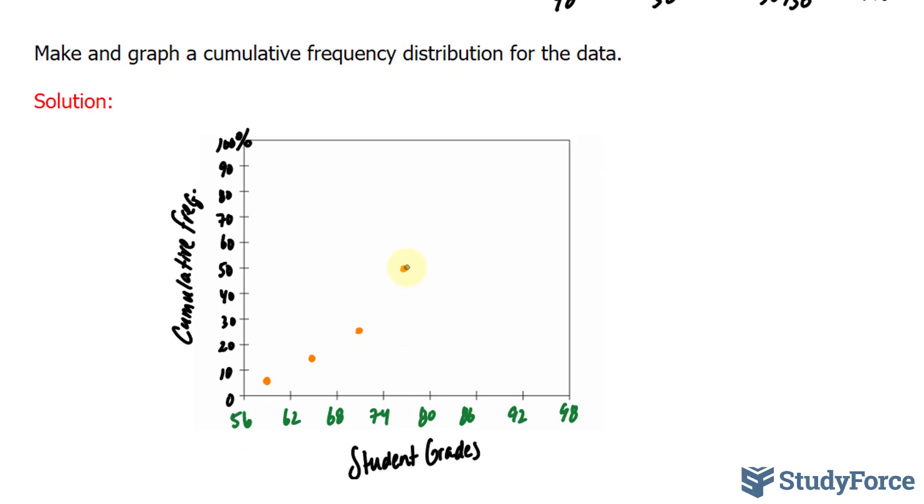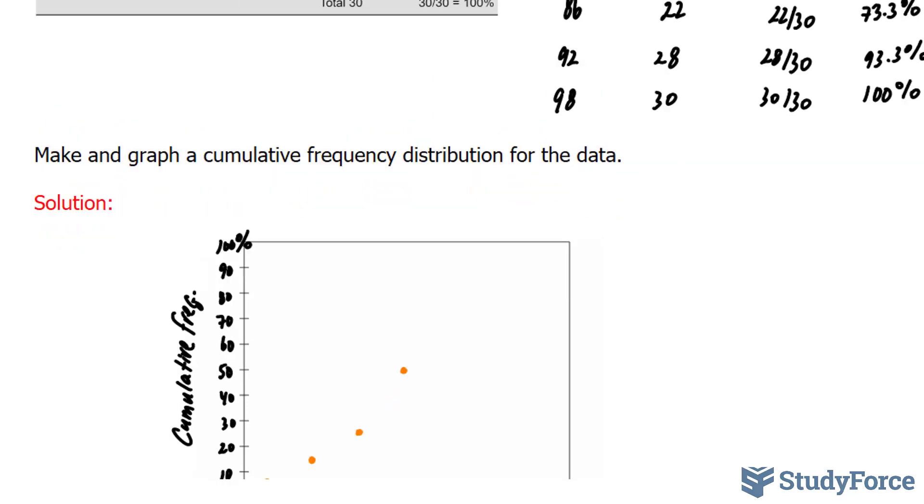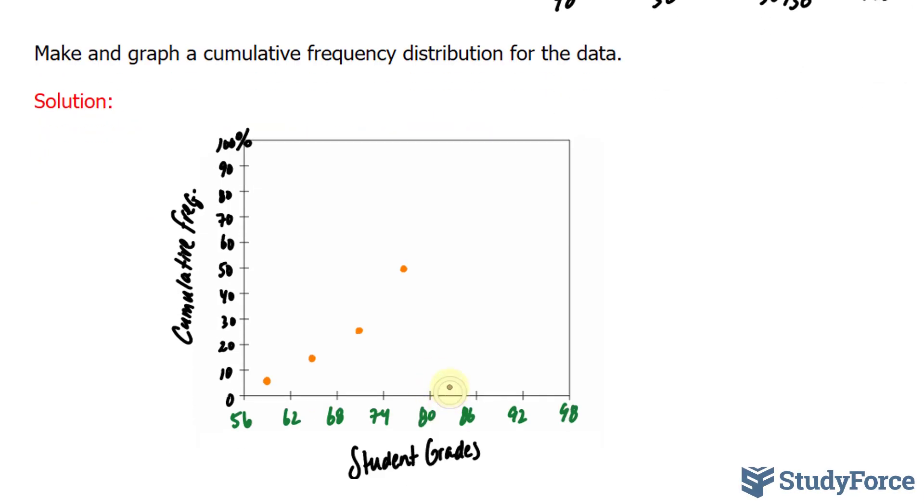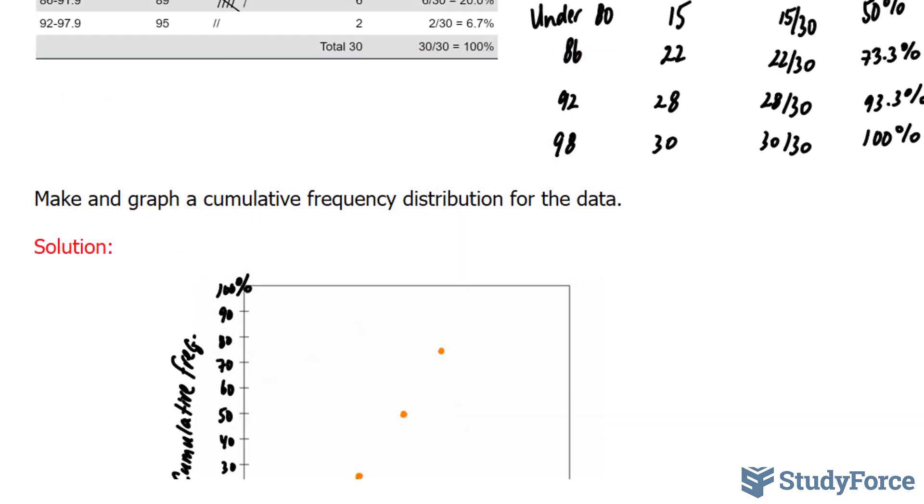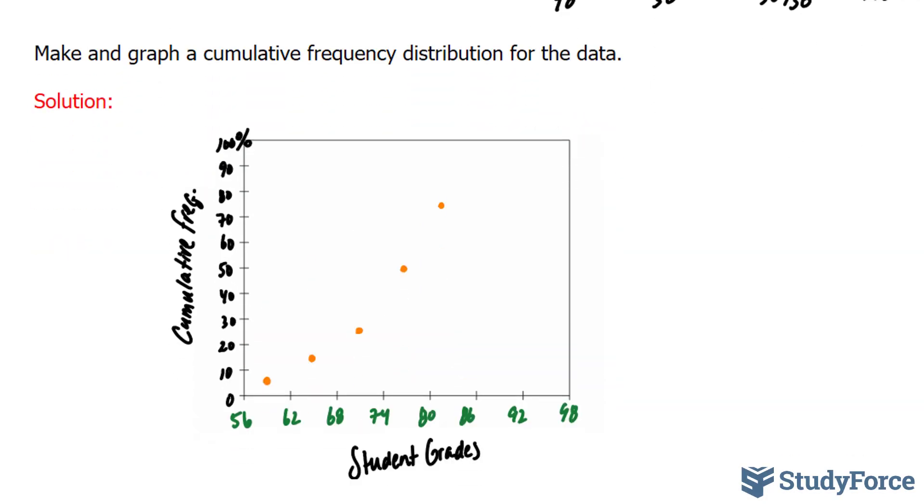And we'll connect these points later on. Under 86, we had 73. Under 92 was 93, and then finally 100. So between these two is 93. And finally, between these two is 100. Next, I'll connect these points with a straight line. And your final graph should look like this.